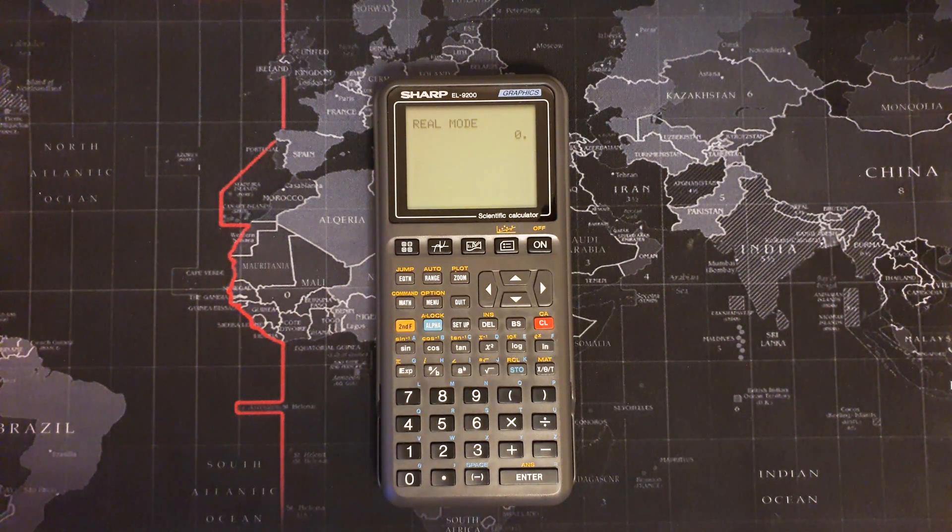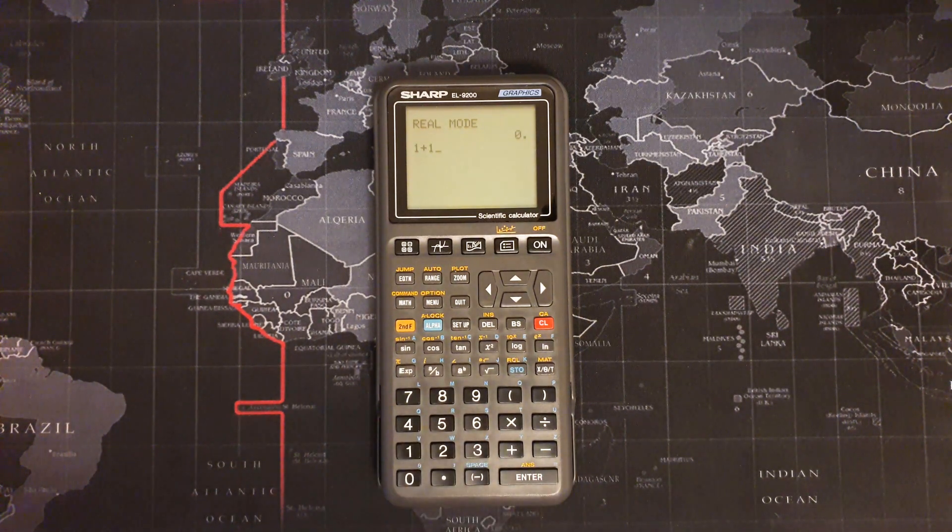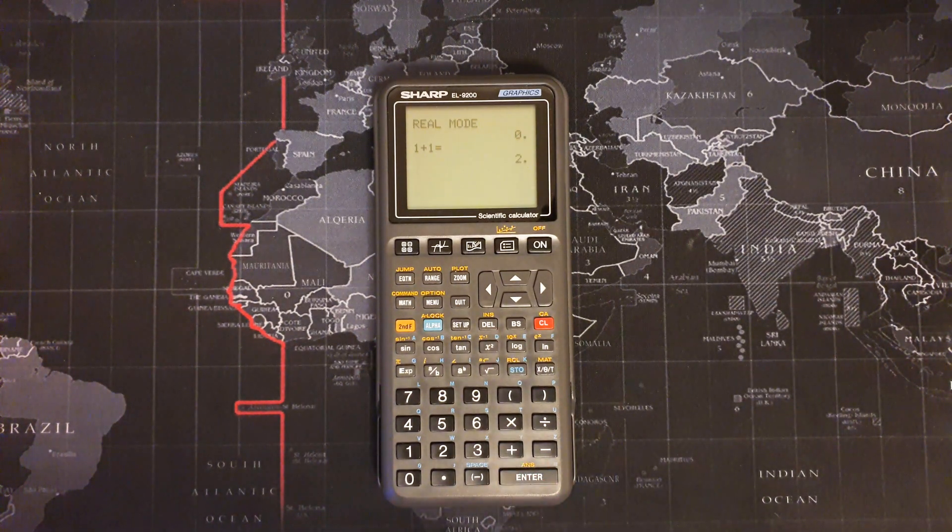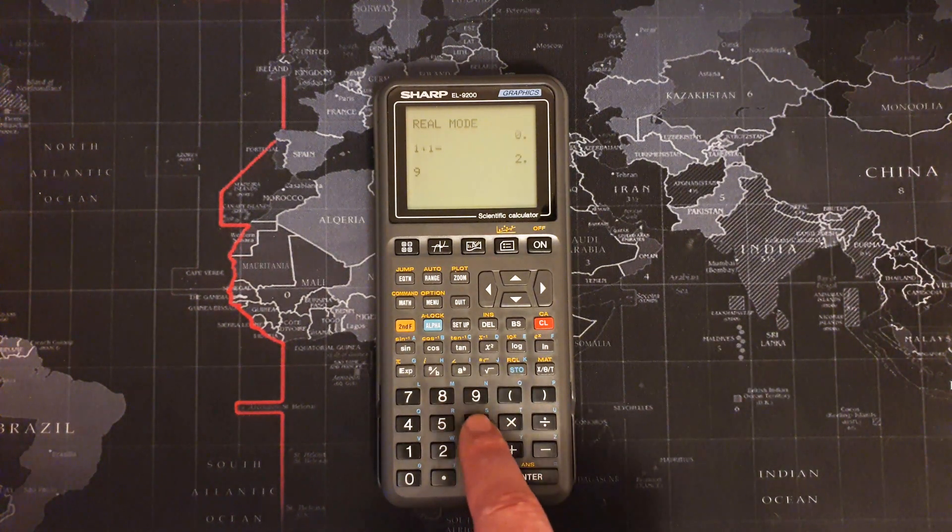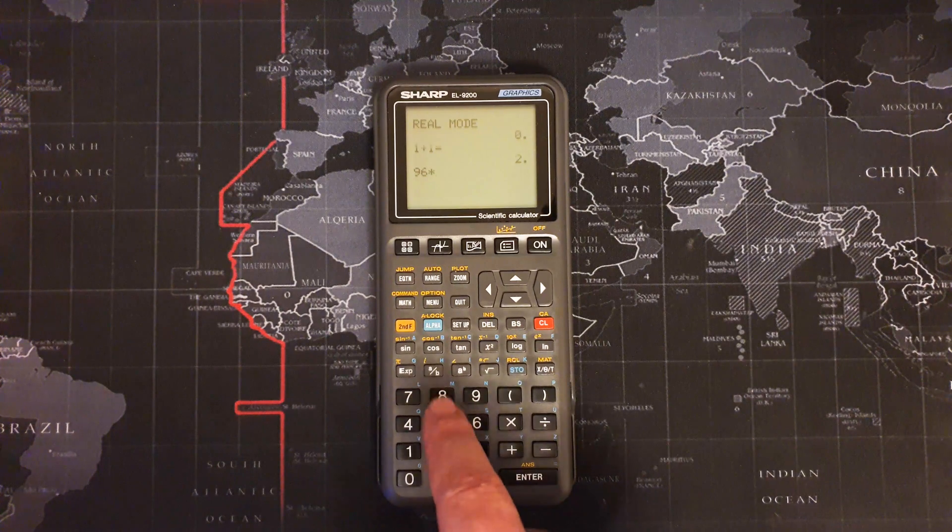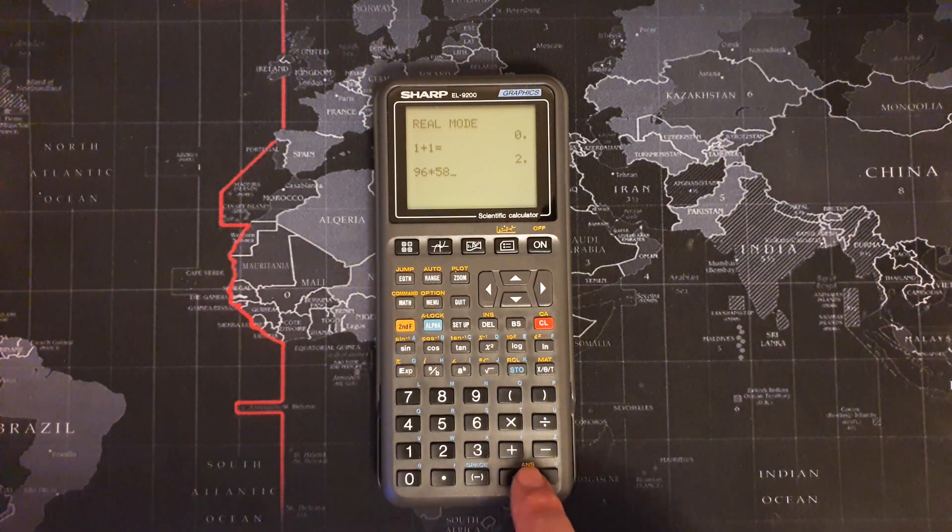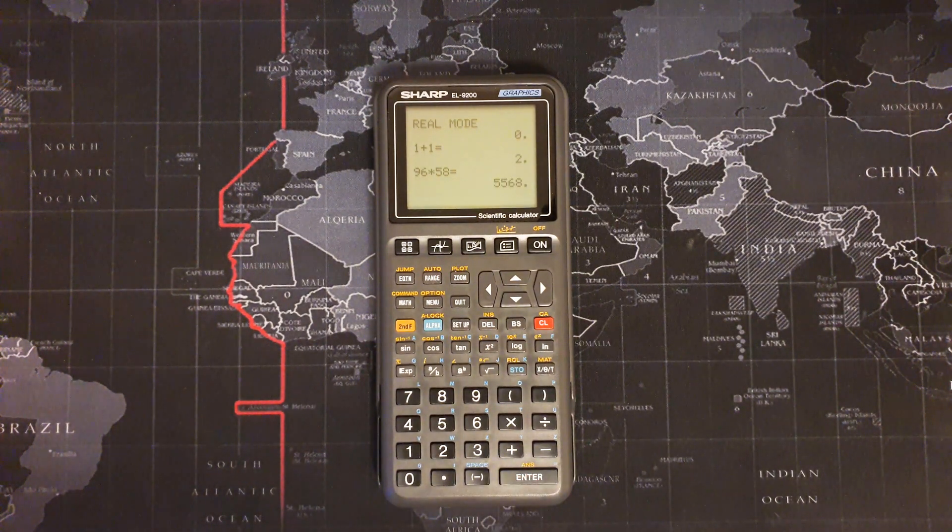So let's start with the easy stuff: 1 plus 1 equals. Did you notice that pause there? 96 times 58 equals. Again a pause.